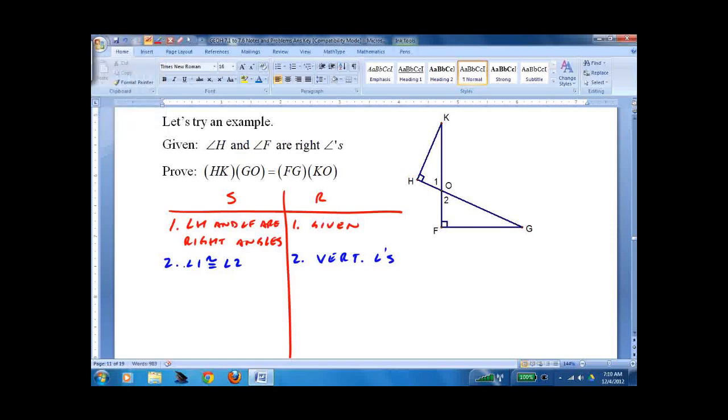Hopefully, you notice that's by vertical angles. And angle H and angle F are right angles. I suppose I should do angle H is congruent to angle F and say something like they're both right angles. Couldn't hurt. But I really don't think we needed that step.